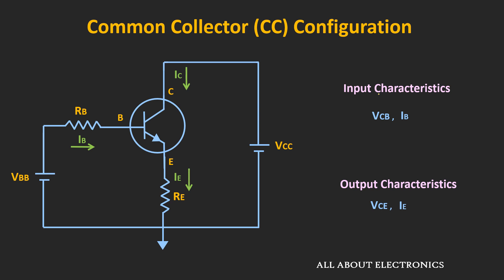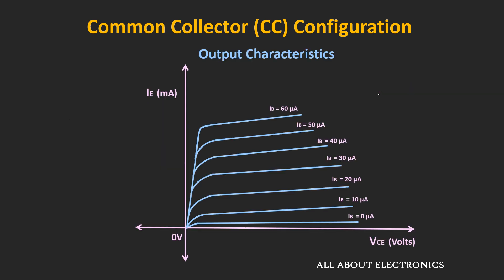Similar to the other configurations, the behavior of the device can be described by two characteristics: the input and the output characteristics. The output characteristics defines the relationship between the emitter current Ie and the voltage Vce. These Ie vs Vce curves are very similar to the common emitter configuration, because the emitter current Ie can be given as α times Ic. Since α is very close to unity, the emitter current is approximately equal to the collector current, making the output characteristics look similar to the common emitter configuration.